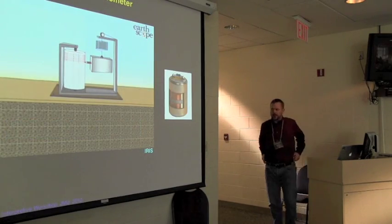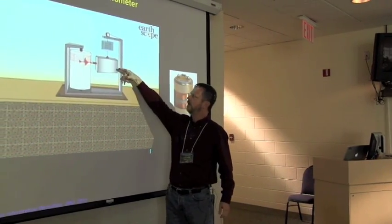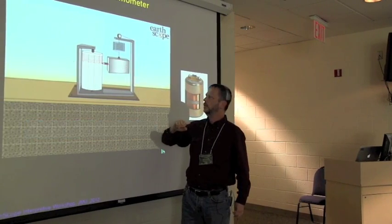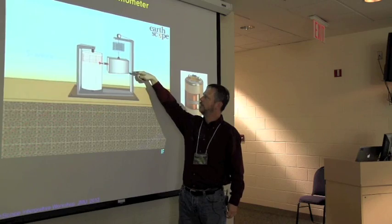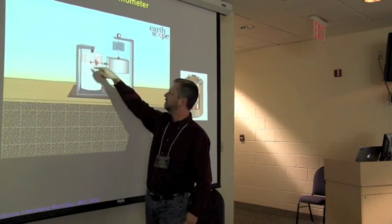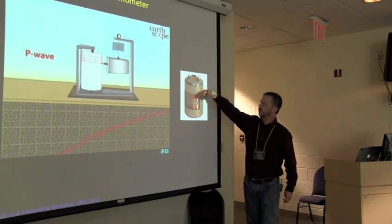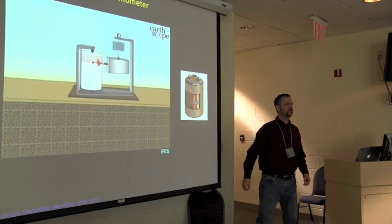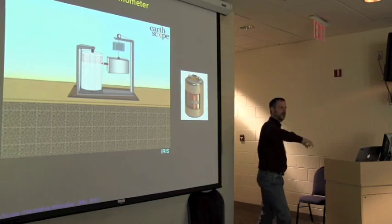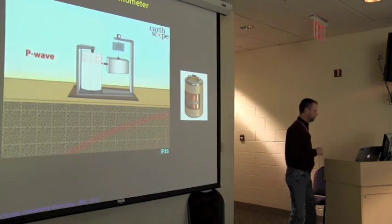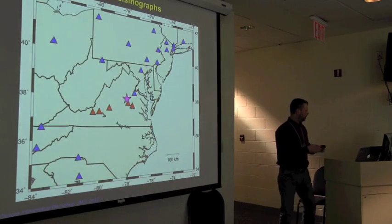Seismometers are essentially a mass on a spring. As the ground vibrates, the mass kind of sits still due to inertia. We can attach a pencil and draw on paper, or alternatively wrap a coil of wire around it and record electronically — in this case the mass is a magnet moving up and down, creating an electronic signal.